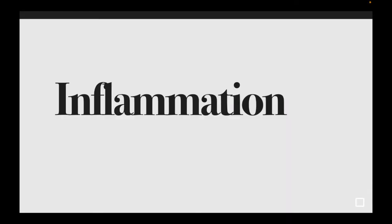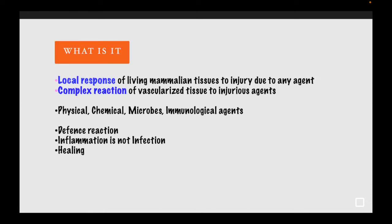In this video we will be discussing the vascular and cellular events of inflammation using an animation. Inflammation is a tissue response by any vascularized tissue to either infection or some damage, which brings a set of cells belonging to your defense mechanism from the circulation to the site of injury to eliminate the offending agent. It is a very complex reaction and may be a response to physical, chemical, infectious, or immunological agents.